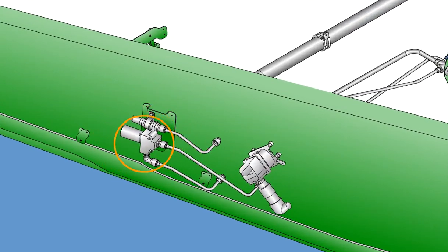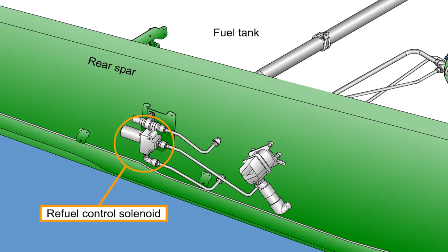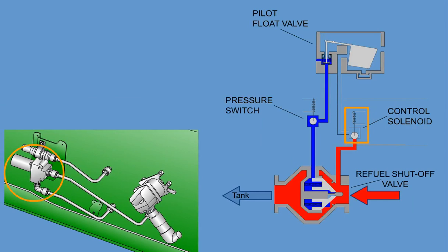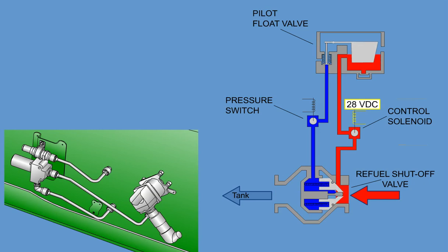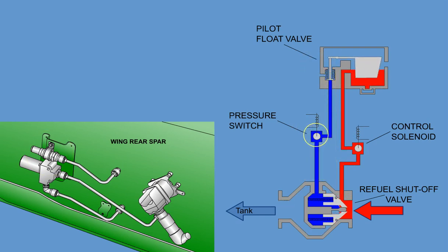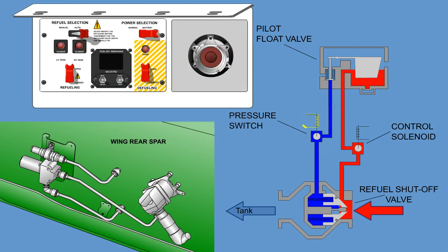The refuel control solenoid is installed outside of the fuel tank on the rear spar to eliminate the potential for an ignition source inside the tank. The single coil, normally closed solenoid is installed in a pilot line between the main refuel line and the high-level float pilot valve. Fuel from the main refuel line is allowed to flow through the pilot line when 28-volt DC is applied to the solenoid. A refuel pressure switch is installed in the pilot line between the pilot valve and refuel shut-off valve. When the float is up and pressure is applied to the refuel system, high pressure will be indicated by the pressure switch, closing the electrical circuit to illuminate the closed indication light on the refuel-defuel control panel.